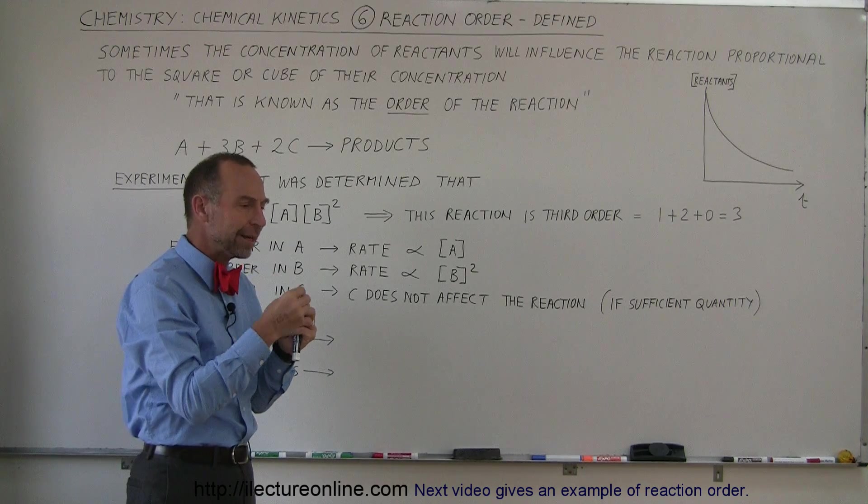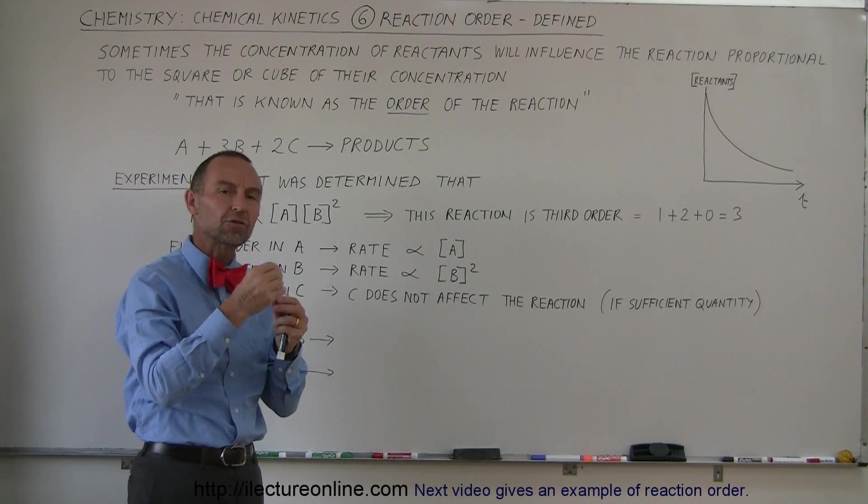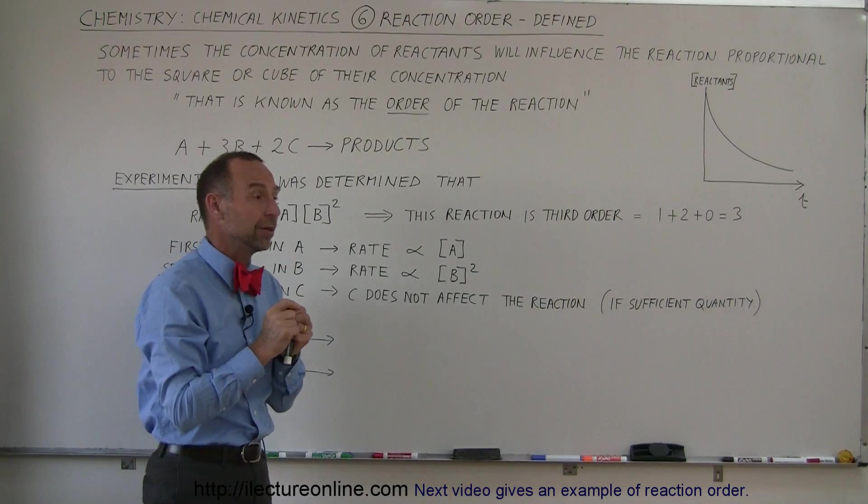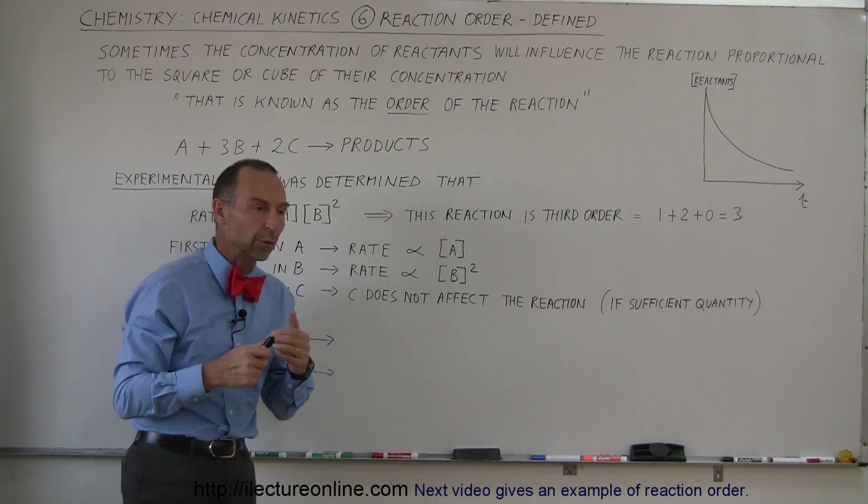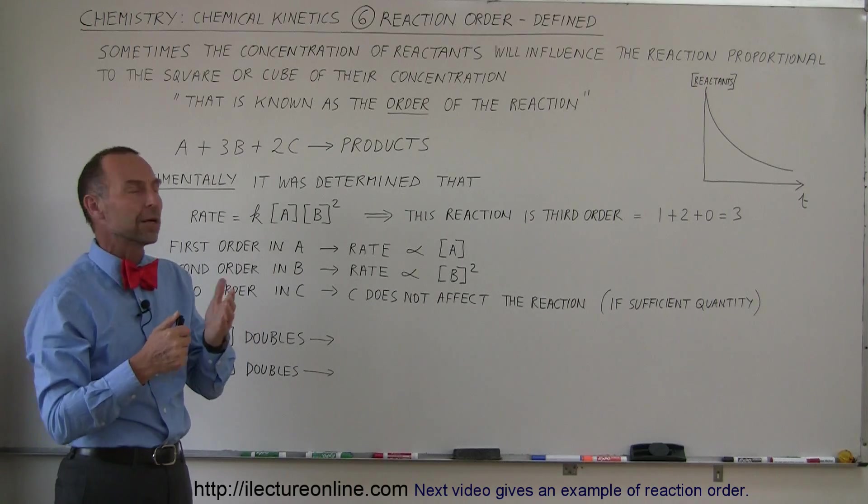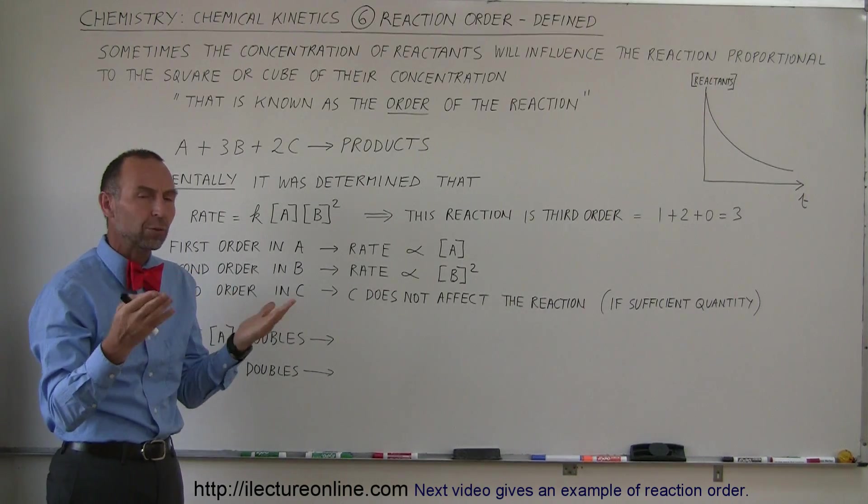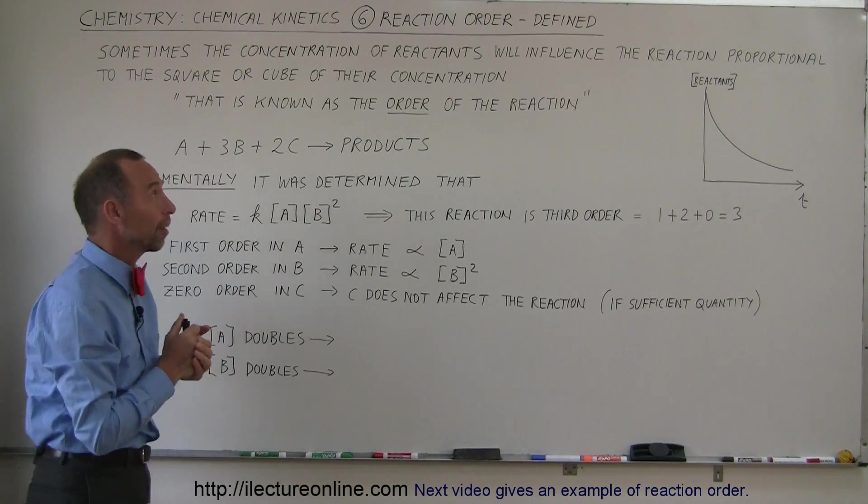But then we realize that there's a dependency on the concentration of the reactants. Sometimes that dependency is not linear. Sometimes that dependency is in the order of the square of the concentration of the reactants or the cube of the concentration of the reactants. So that's where the term order of the reaction or reaction order comes from.